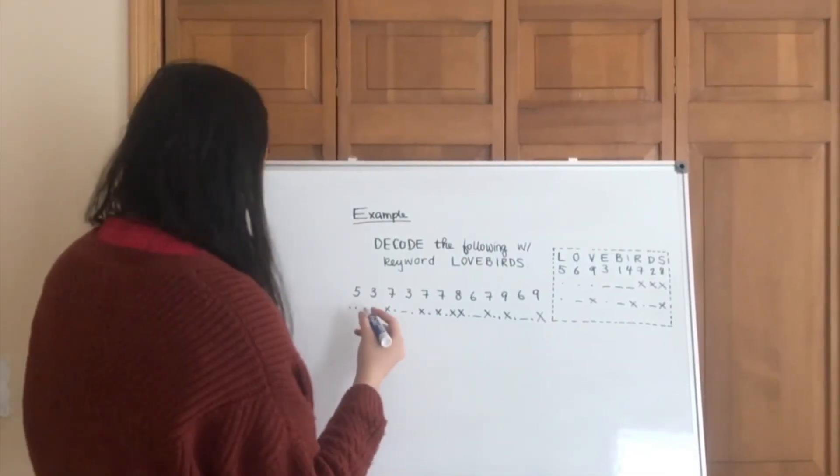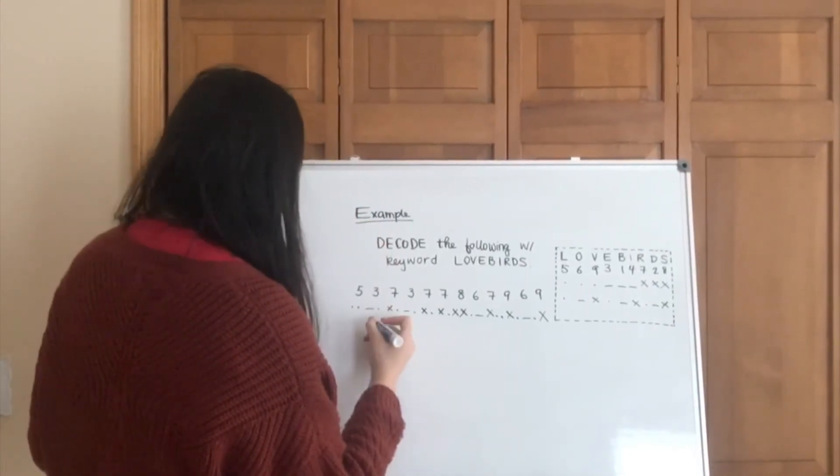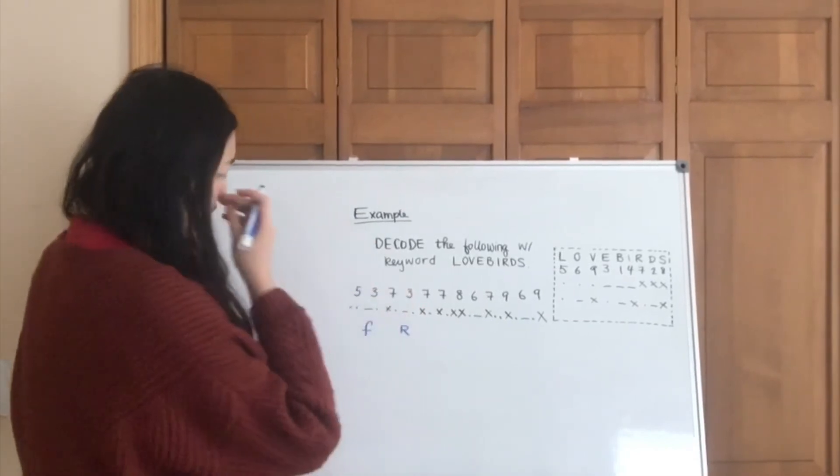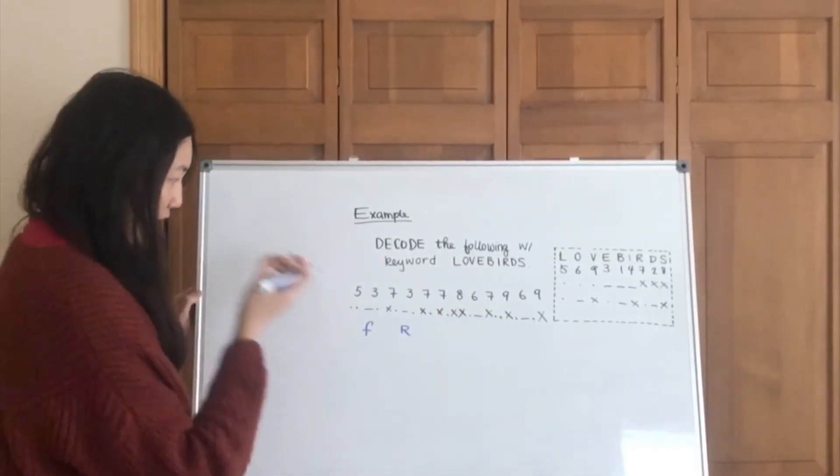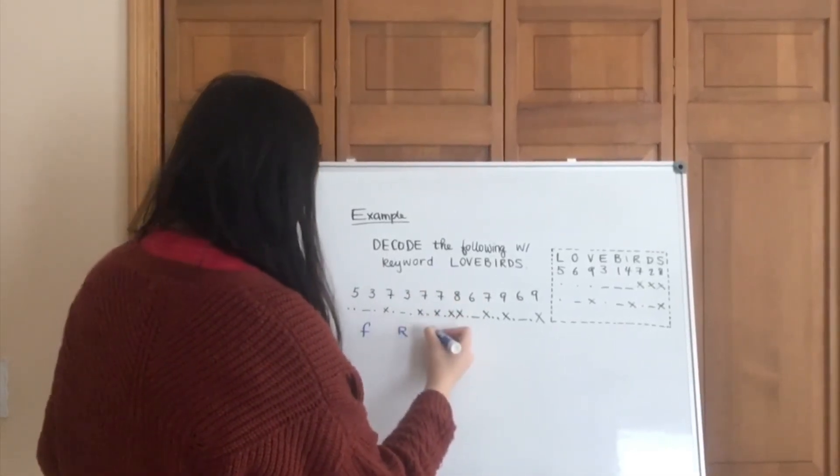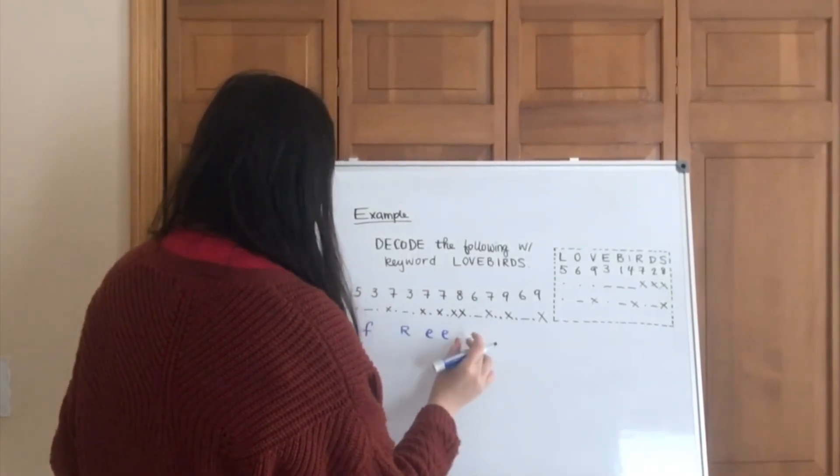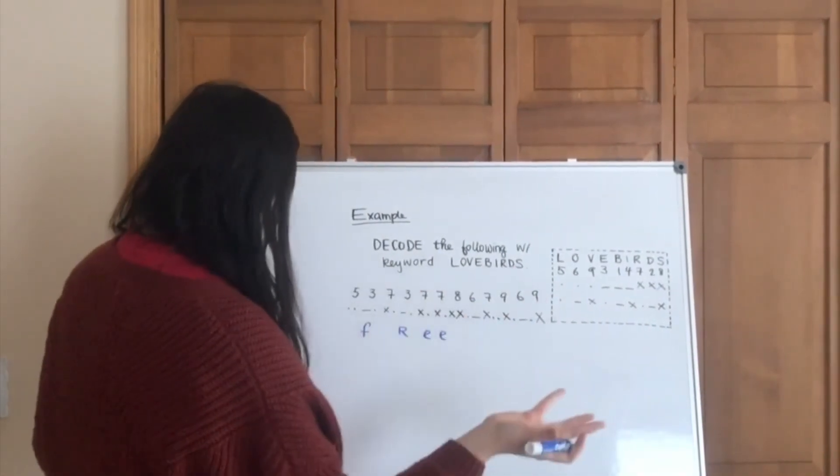So what is this? This is F, R, remember that this just means a separator for two distinct letters. E, E, this is a space separator, so this is one word, free, that makes sense.